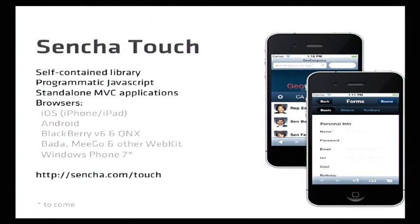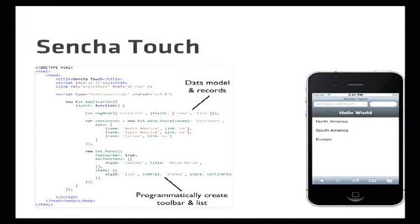Sencha Touch is our self-contained library. It's programmatic JavaScript and allows you to create full MVC applications. If you've worked with object-oriented frameworks of any kind, it'll look familiar. Today it supports iOS, Android, BlackBerry 6, and will work on Windows Phone 7 and IE9 Mobile when that ships. The type of experience is more app-like — because you have full control of the DOM, you can duplicate a lot more native behaviors like bounce physics, scrolling, and effects. Instead of declaring UI elements in markup, you declare them in JSON structures.